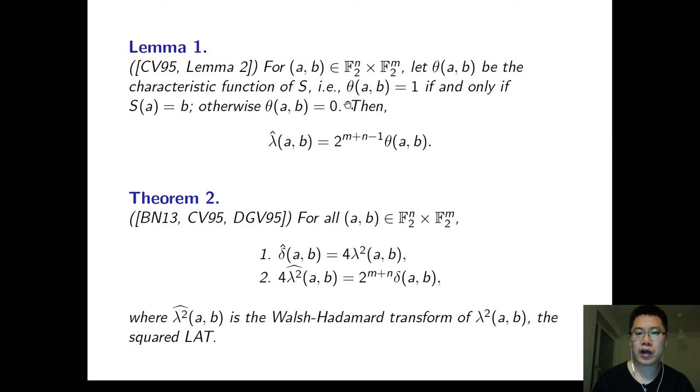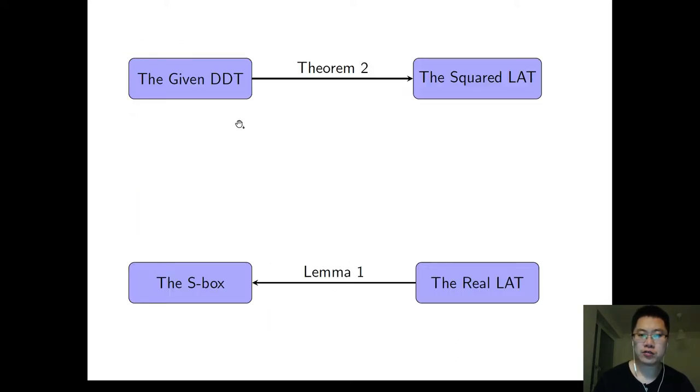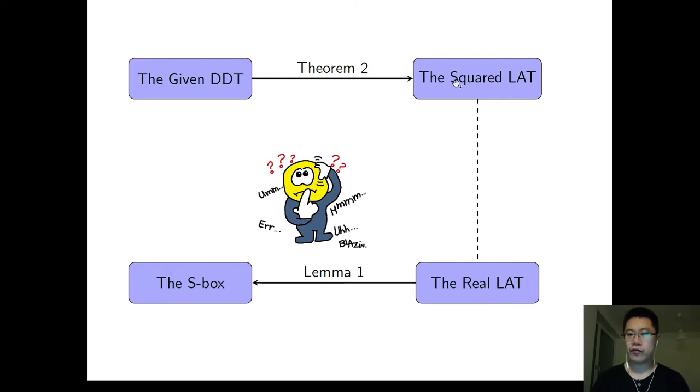And from Theorem 2, we apply Walsh-Hadamard Transform to the DDT and we get the squared LAT here. To summarize the properties, we can go from the given DDT to the squared LAT with Theorem 2, and we can go from the real LAT to the S-Box with Lemma 1.